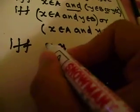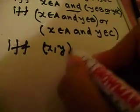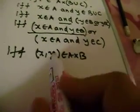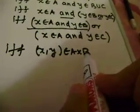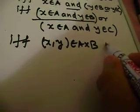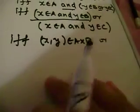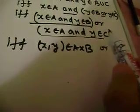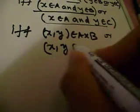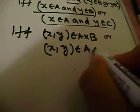Well then, this just means that the ordered pair X, Y belongs to A cross B. Just this part right here. Because if X belongs to A and Y belongs to B, then the ordered pair X, Y must belong to the Cartesian product of A and B. And similarly for this, if X belongs to A and Y belongs to C, then of course, X, Y belongs to the Cartesian product A cross C.